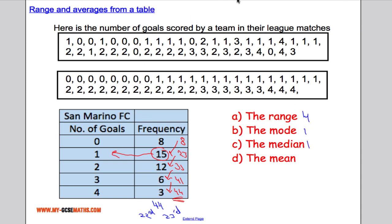The mean, on the other hand, like I showed you before using the data set, we could do 8 times 0, 1 times 15, 2 times 12, etc. Using the table, we do the exact same thing.